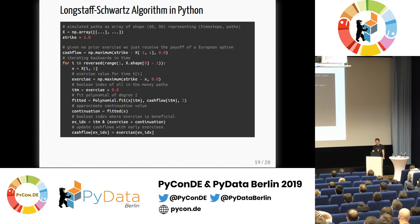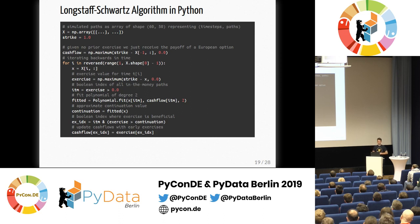So this is how the Longstaff-Schwartz algorithm works — it's the simplest way I could possibly formulate it. I've even discarded discounting here. I don't think you can do it any simpler. If you know a way, let me know. If you want to use it in practice, of course it would be more complicated.